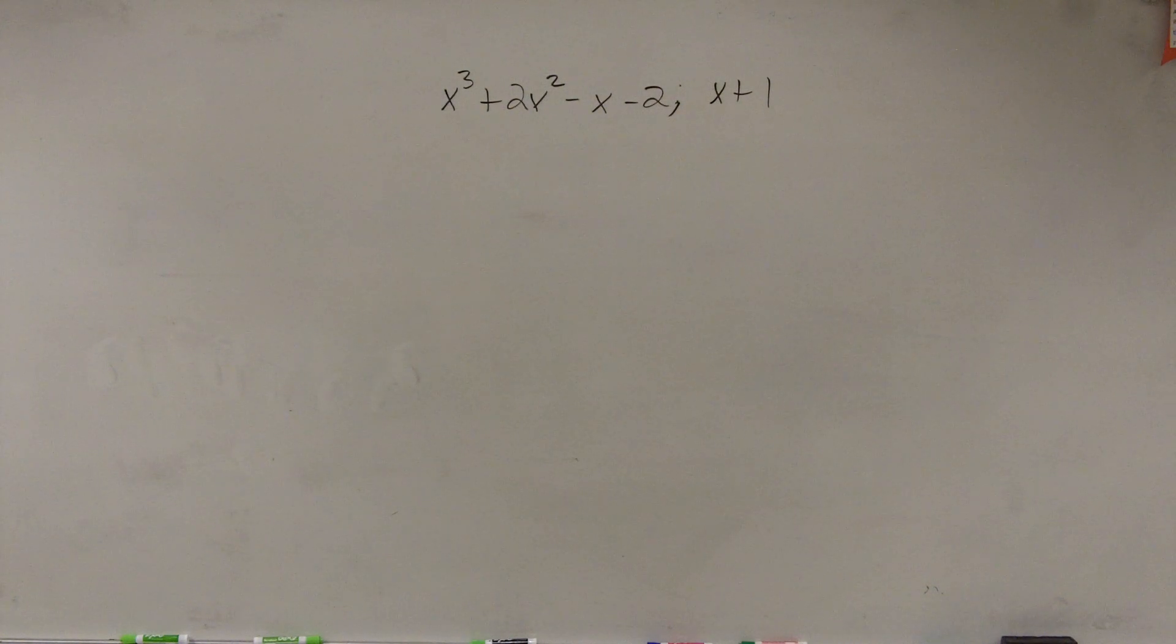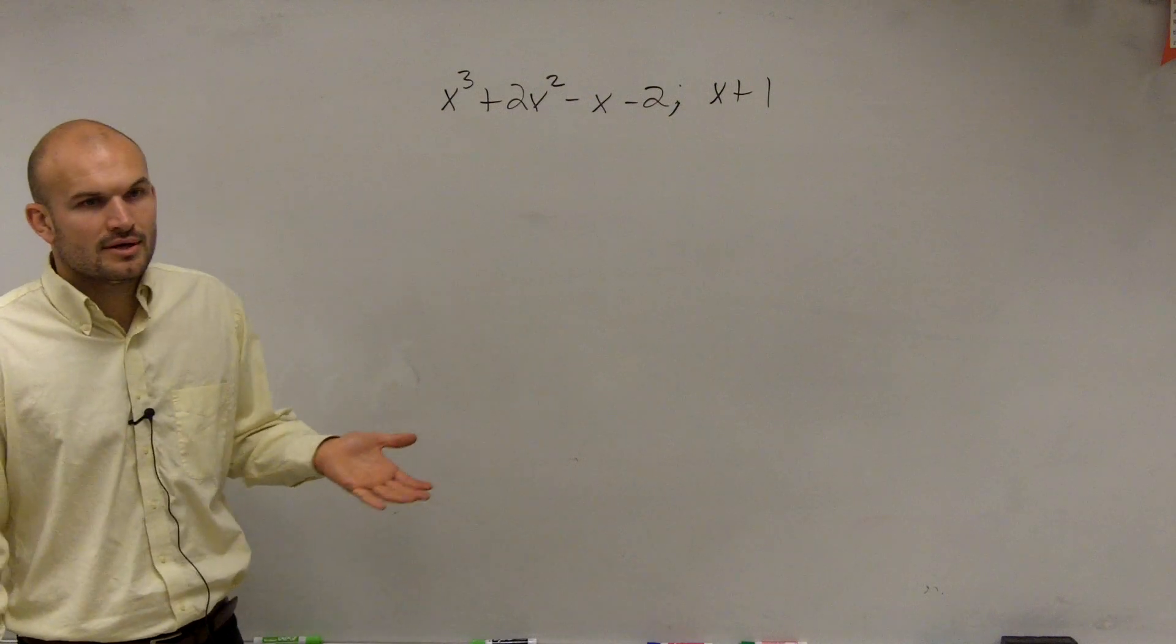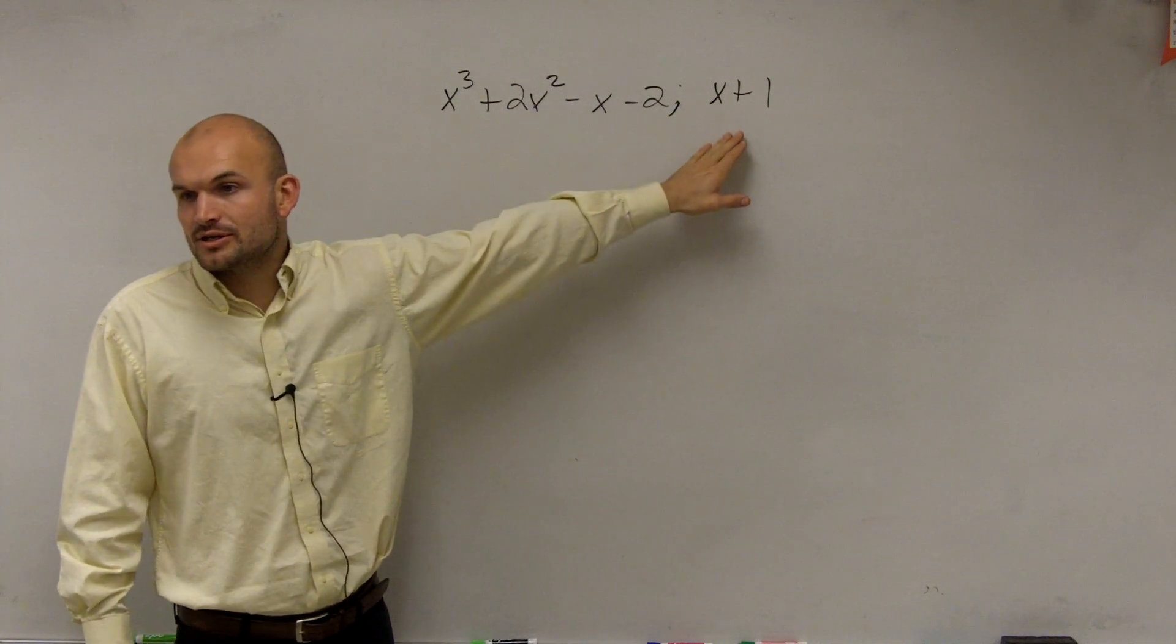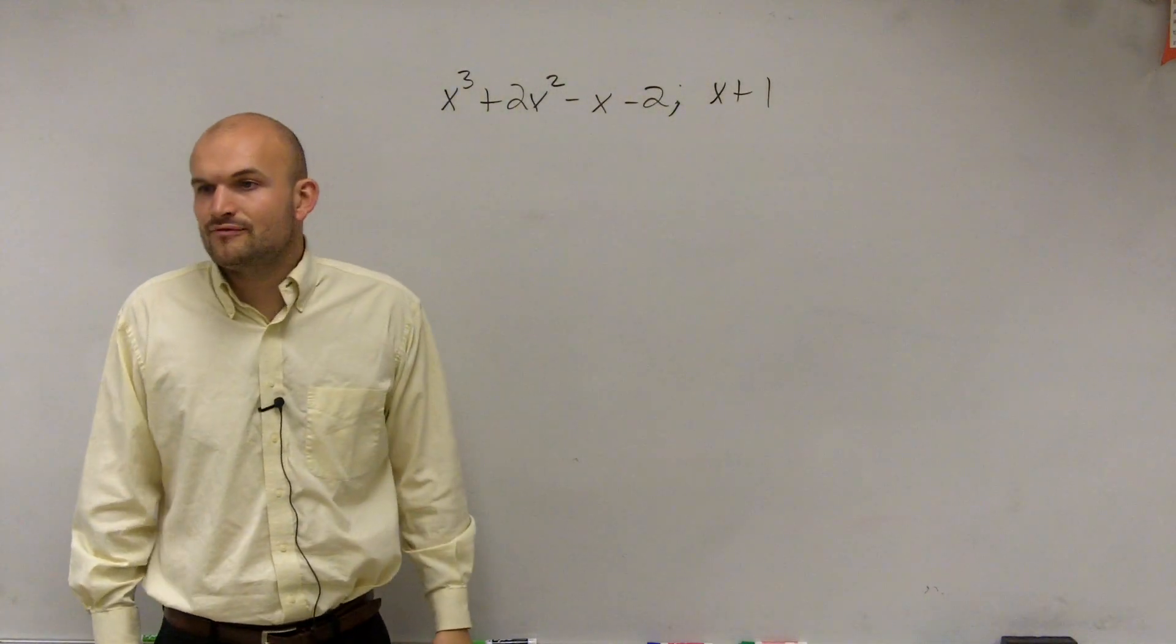So the homework asks us to factor x cubed plus 2x squared minus x minus 2. It says here's your polynomial function, here's a factor. If this is a factor, find the remaining factors.